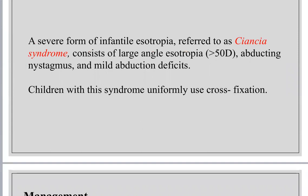Ciancia syndrome is a severe form of infantile esotropia characterized by three features: the angle is typically over 50 prism diopters, cross-fixation is present because the angle is large, and there is abducting nystagmus — the nystagmus direction is towards abduction with very small amplitude and very high frequency.